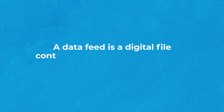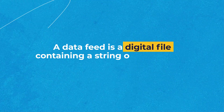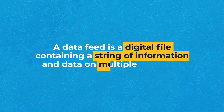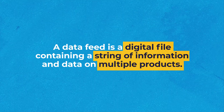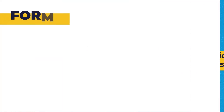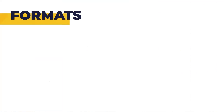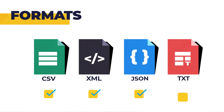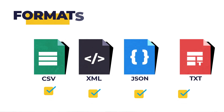A data feed is a digital file containing a string of information and data on multiple products. It can have different formats from CSVs to XMLs to JSON files or TXT feeds. These are basically just different languages or formats for your information, and what format a marketplace prefers is completely up to the marketplace.